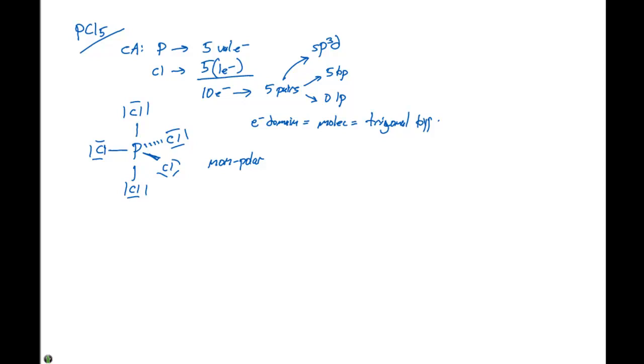Let's look at another example. In this case, we'll look at SF6. Our central atom, in this case, is sulfur. Sulfur, as a central atom, has six valence electrons.